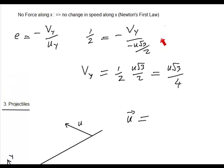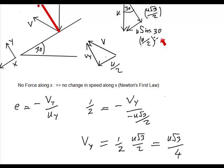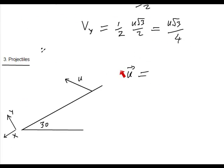This means that U is... Well, the x part of it is U over 2. And it's along the x direction, so it's plus. So it's U over 2 i and U root 3 over 4 j.